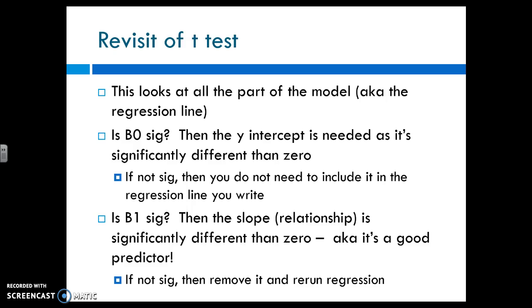Review of the T test. So this is looking at all the parts of the model. So if beta 0 is significant, then the Y-intercept is needed in the model and is different than 0. If it's not significant, then you don't have to include it in your line. If beta 1 is significant, then the slope, the relationship of beta 1 is significantly different than 0, and it is a good predictor. If that is not significant, then remove it and rerun your regression.